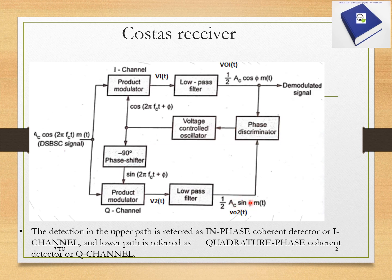The block diagram of the Costas receiver shows that the DSBSC signal is provided to two different product modulators. Each product modulator along with a low pass filter and the local oscillator forms a coherent detector, giving two coherent detectors. For one, the VCO output is applied directly; for the other product modulator, it is applied with a 90-degree phase shift, making it sin(2πf_c t + φ). This channel is called the in-phase coherent detector and the other the quadrature phase coherent detector.